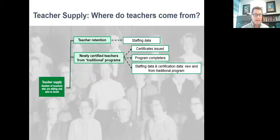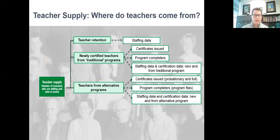There are also teachers from traditional teacher preparation programs. There are a number of ways and data sources you can look at: the number of teaching certificates issued each year, the numbers of program completers each year, and by merging annual staffing data with certification data to see the numbers of new and experienced teachers who take a teaching position each year. Likewise, the same process can be followed for teachers from alternative teacher preparation programs.